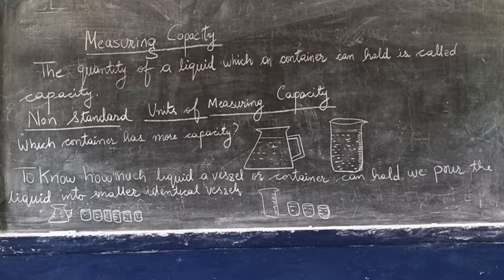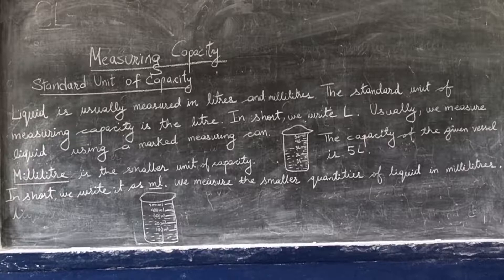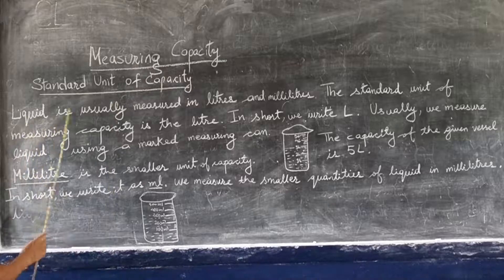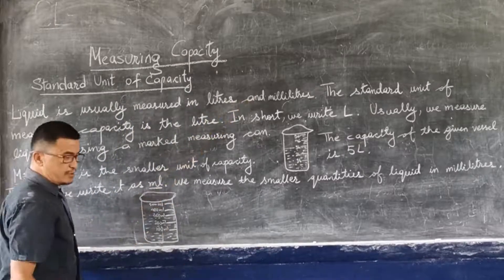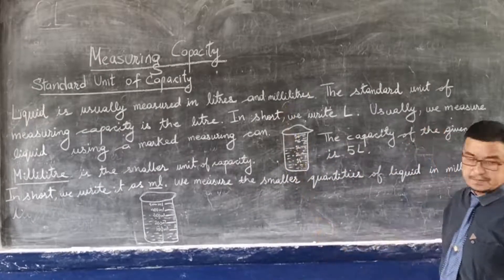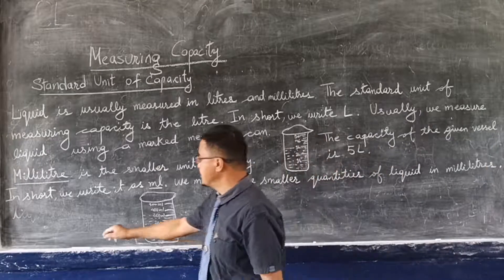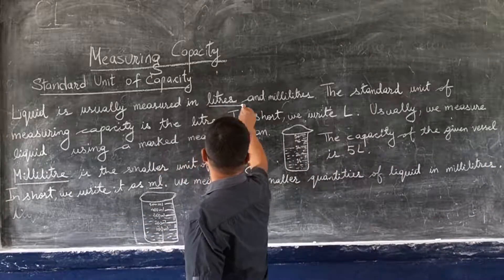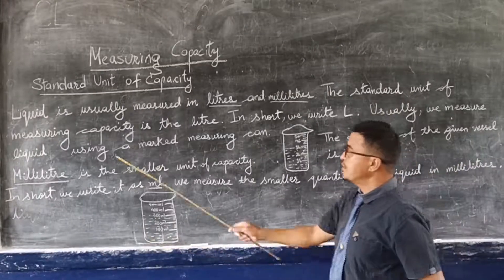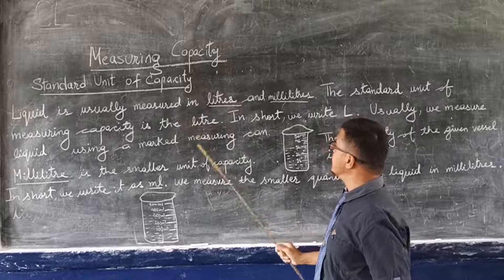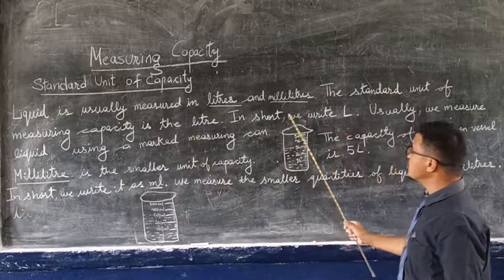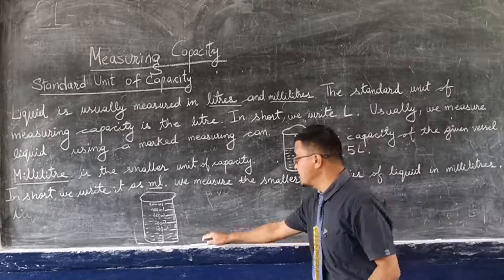Now in capacity we are going to learn the standard unit of capacity. Liquid is usually measured in litres or millilitres. The standard unit of measuring capacity is the litre. In short, we write it as L.